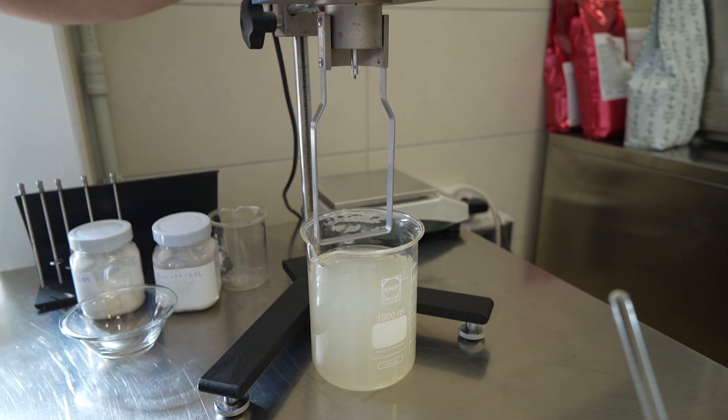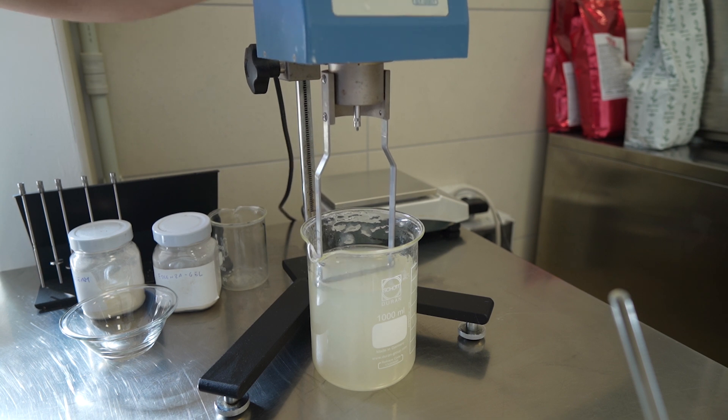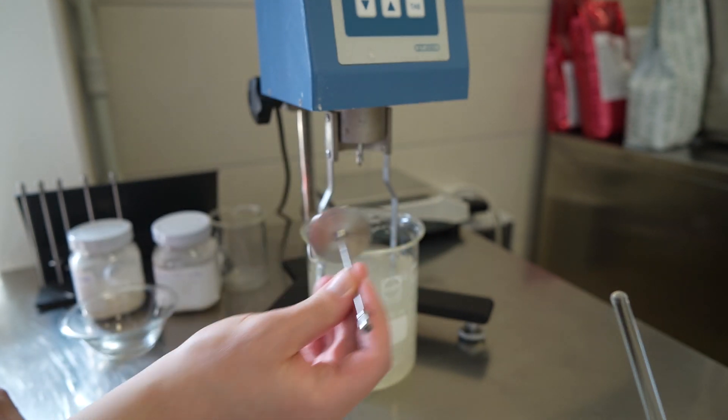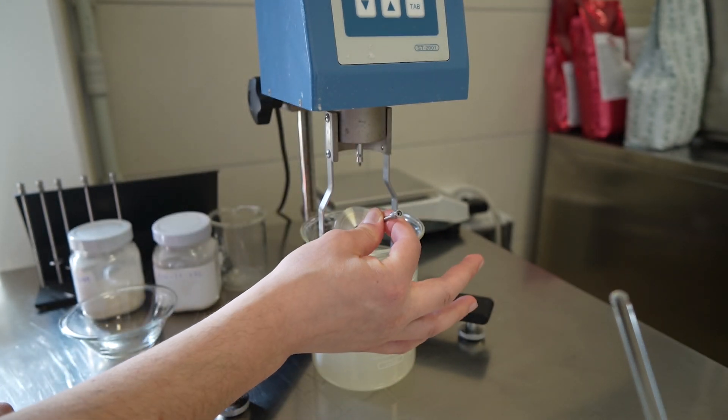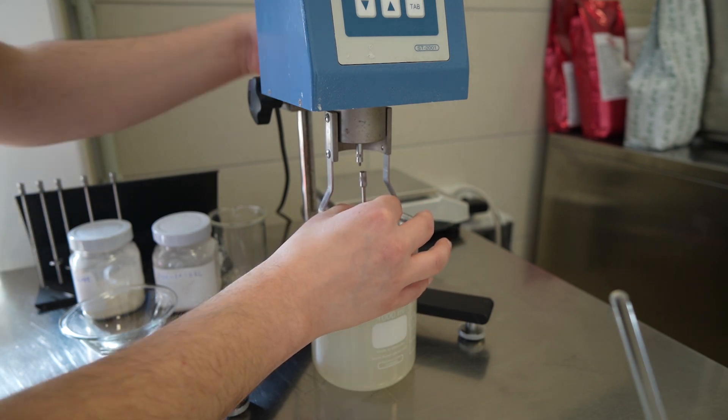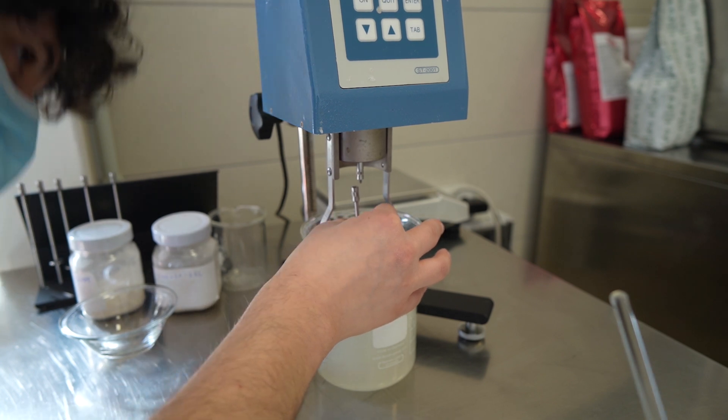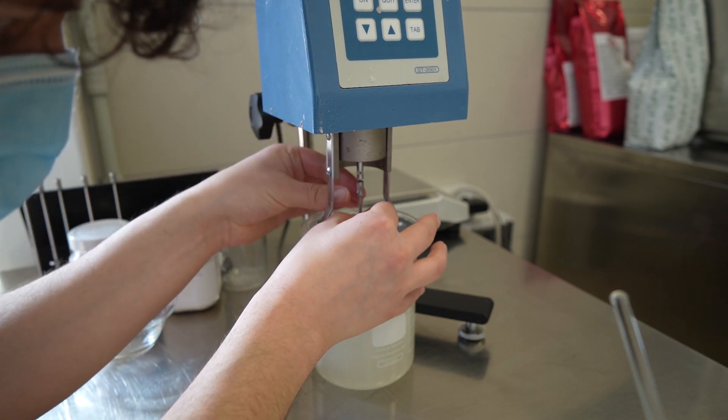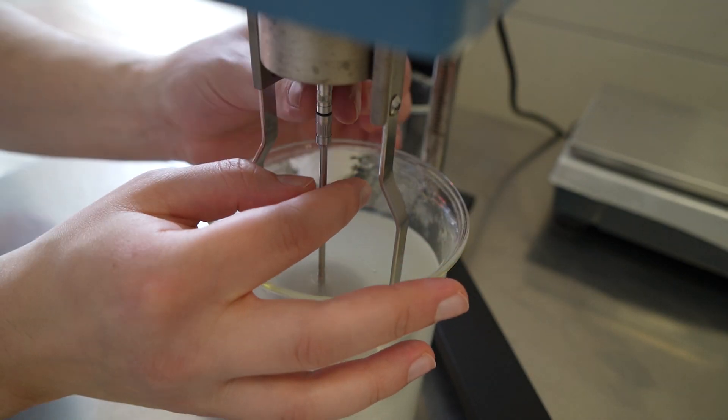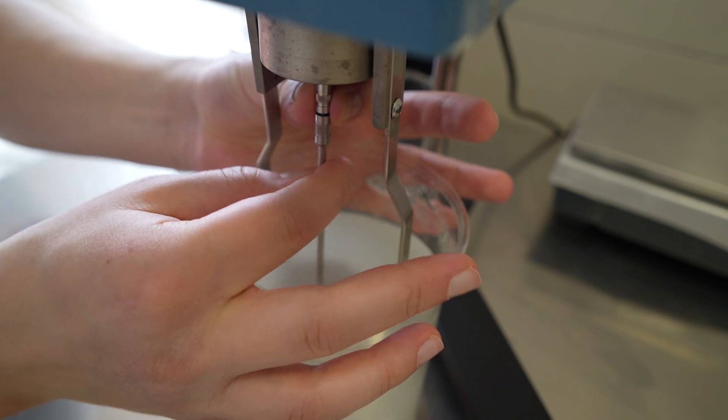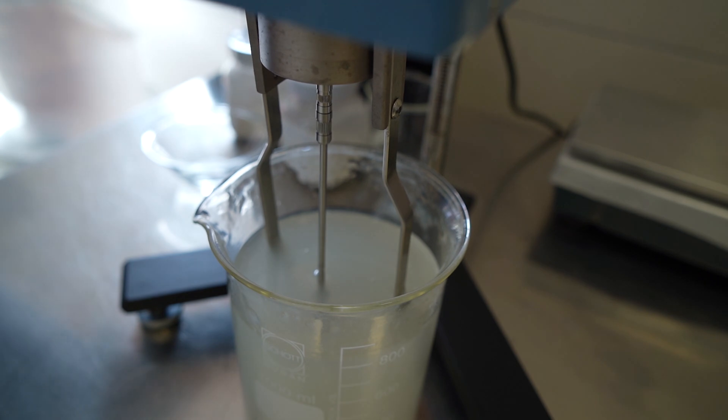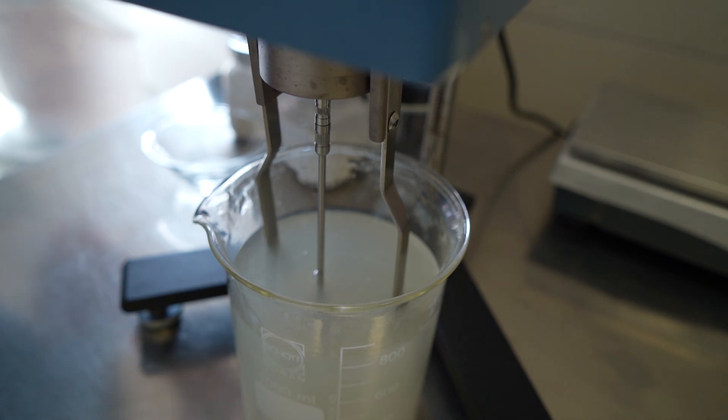Now I'm going to lower the viscosimeter into the beaker with the mix and position the spindle. When positioning the spindle, it's very important not to let any bubbles inside, so I'm going a little bit diagonal. Then I go a bit lower and fix it onto the motor. Once attached, I make sure to reach the right level and now I'm ready to go.